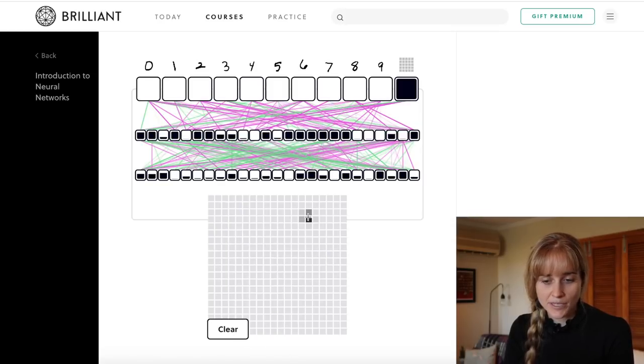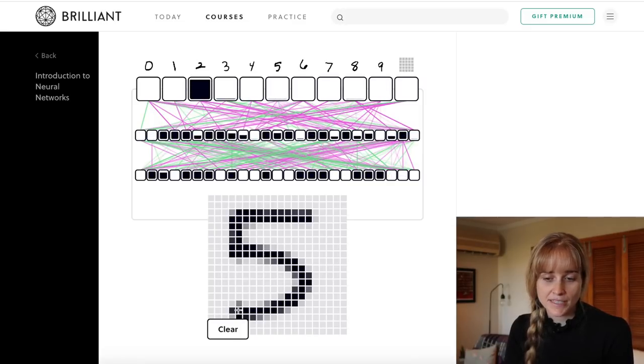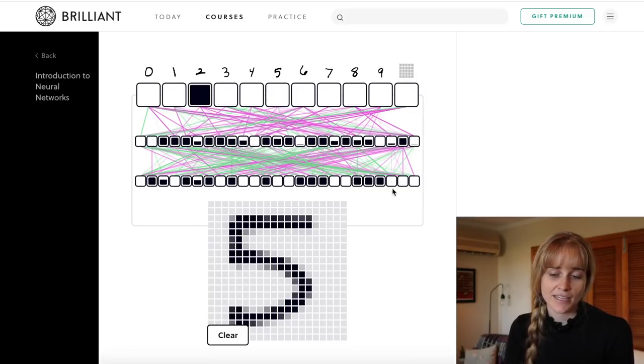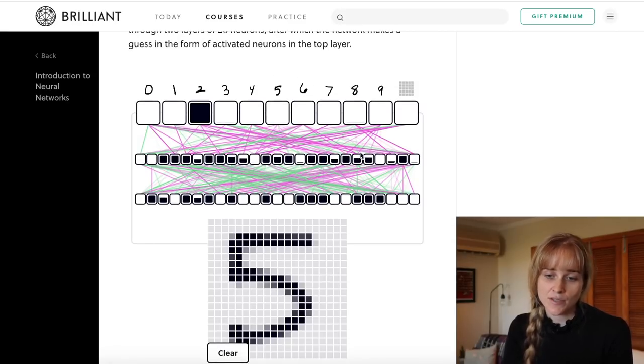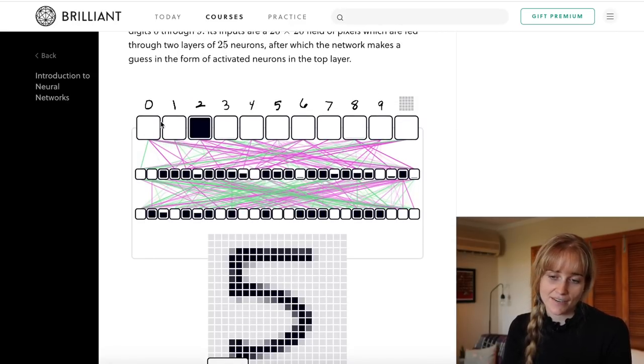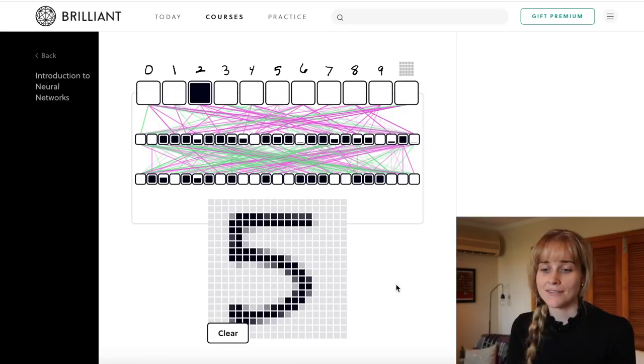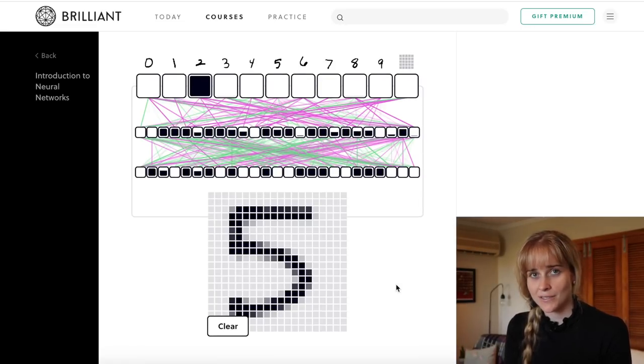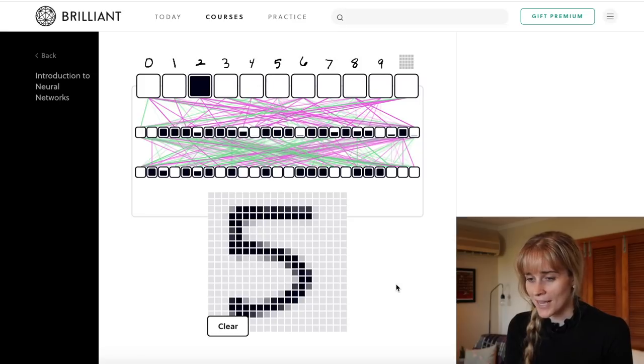So as I'm drawing on the input grid, the input moves into two layers of 25 neurons which then result in our guess in the top layer up there. We'll come back to this particular network and actually have a look at the real code that is behind it a little bit later in the video, but we'll continue going with the course for now. Just keep in mind that we'll come back to this.